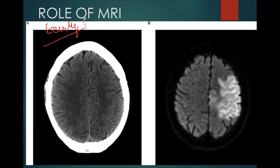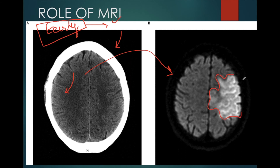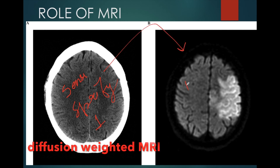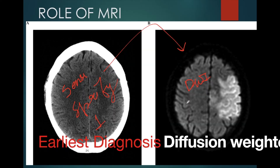Sometimes in early hyperacute infarction, we may not be able to see any changes on CT scan — in such cases, MRI has a role. In this patient who presented with left-sided hemiplegia, there were no findings on CT scan, but on diffusion-weighted MRI we can see hyperintensity in the left cerebral hemisphere. This patient presented to the emergency room within one hour of his weakness, and MRI picked up findings that CT could not. MRI has significantly higher sensitivity and specificity in diagnosing ischemic infarction in the first few hours after onset. By looking at diffusion-weighted MRI features, we can plan for thrombolysis or mechanical thrombectomy — procedures useful in stroke presenting up to 6 hours, which only MRI would be able to diagnose.